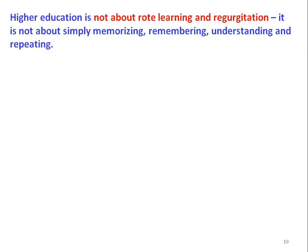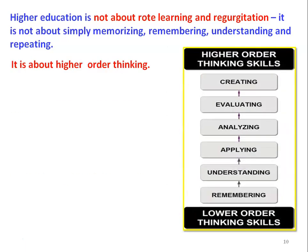Higher education is not about rote learning and regurgitation. It is not about simply memorizing, remembering, understanding, and repeating. It is about higher order thinking. The six levels of cognitive skill are: remembering, understanding, applying, analyzing, evaluating, and creating. The bottom three — remembering, understanding, applying — are lower order thinking skills, and the top three are higher order thinking skills. Through higher education, we have to make students work on higher order thinking skills.